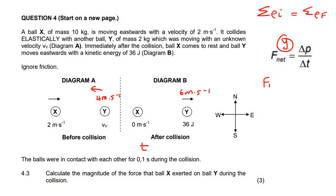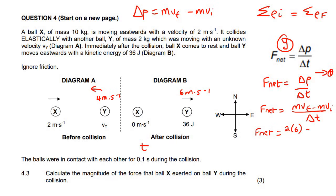Choose a direction - let's say right is positive. Fnet equals delta P over delta t. Delta P is MV final minus MV initial. The mass of ball Y was 2 kilograms. Ball Y's final velocity was 6 meters per second to the right. Its original velocity was 4 to the left, so we put it as negative because right is positive. The time is 0.1. Type this all in and we end up with 200 newtons.